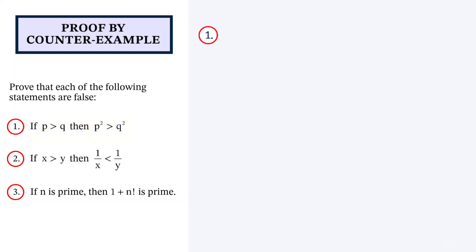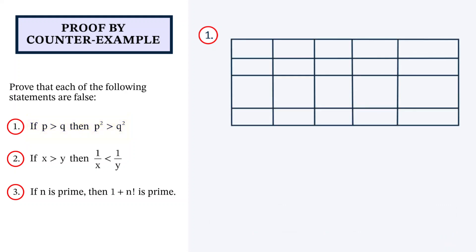To do this, it's often helpful to draw a table. For this question, we can label the columns p, q, p squared, q squared, and whether the statement is true or false for particular values of p and q. Let's first try p is equal to 2 and q is equal to 1. So p squared is 4 and q squared is 1. We can see that p is greater than q and p squared is greater than q squared, so that means this is true.